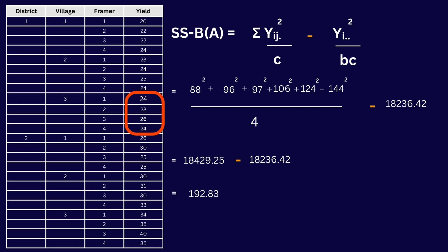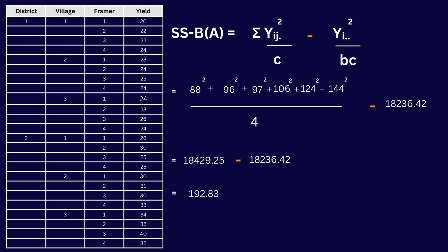Continuing the sum of squares of BA: 106 is the sum of all yield values in village 1 district 2, 124 is the sum for village 2 district 2, and 144 is the sum for village 3 district 2. After doing all the calculation, we got 192.83 as our sum of squares of BA.